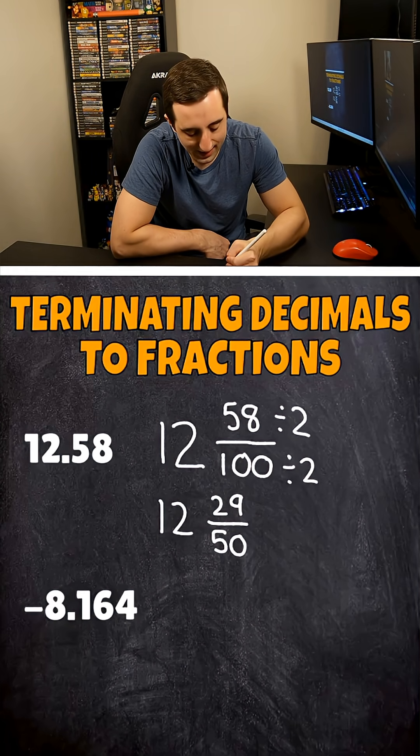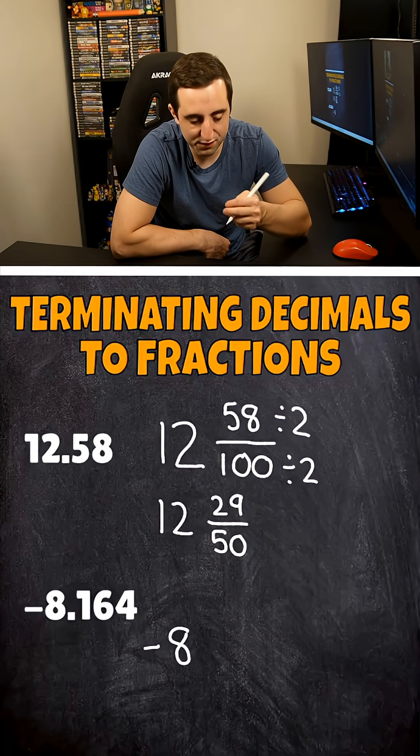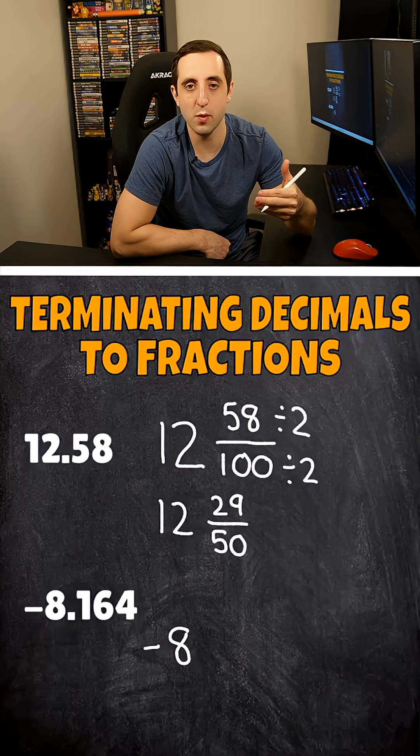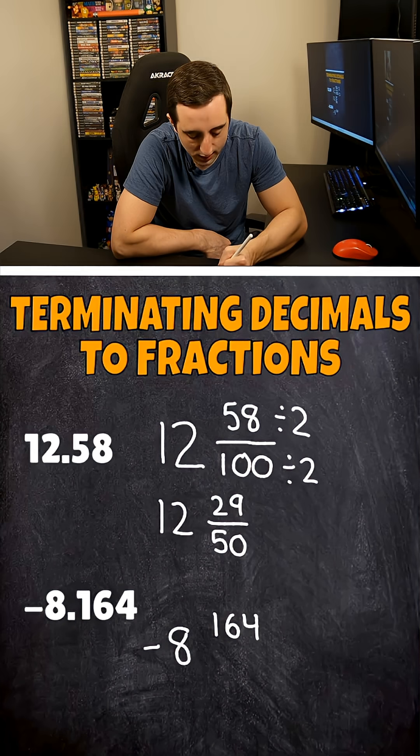And now let's go ahead and take a look at number two. We have a negative eight that's going to go out front. But now we have three numbers behind the decimal point. So we're not in the tenths place. We're not in the hundredths place. But we are now in the thousandths place. So this is going to be 164 in our numerator over 1,000 this time.